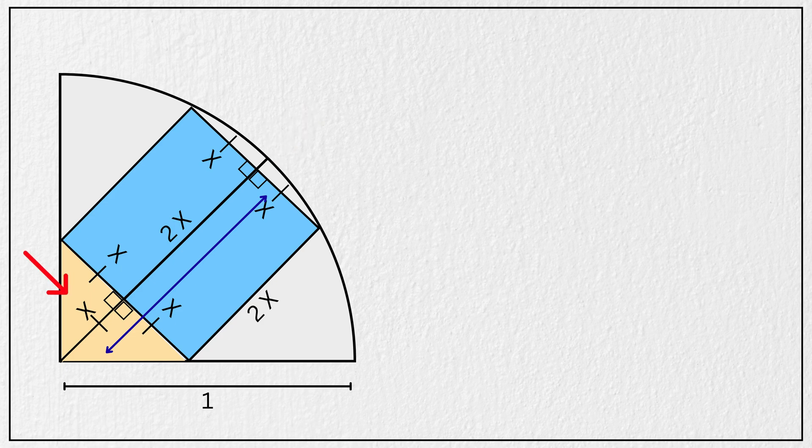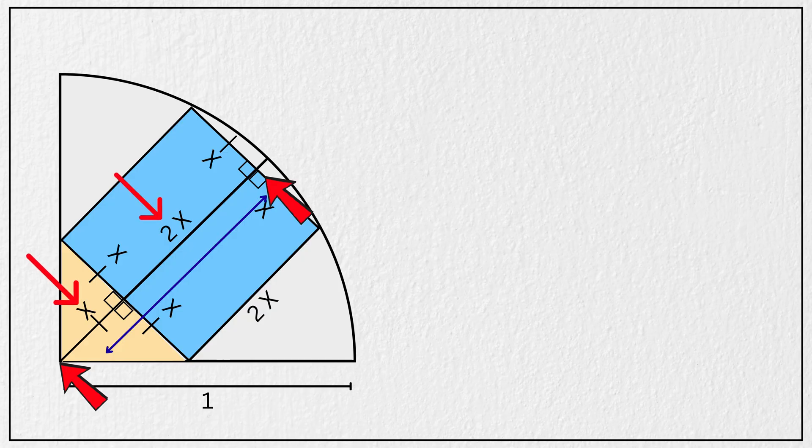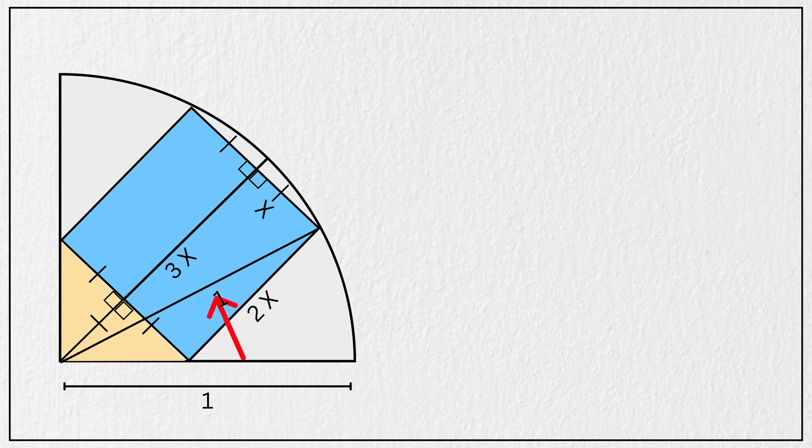That means this full length must be equal to x plus 2x, which is 3x units, right? Now let's draw the radius of the quarter circle like this, and focus on this right triangle.